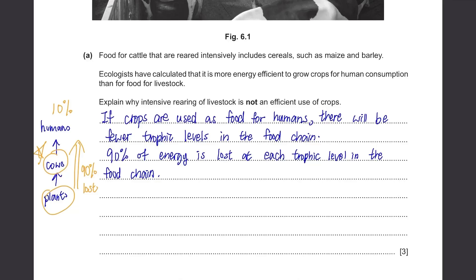Also, the cows will lose their own energy through sweating and excretion, digestion and all that. So overall, there will be just less energy available to humans if they consume cows, so it's much more energy efficient to directly consume the plants.